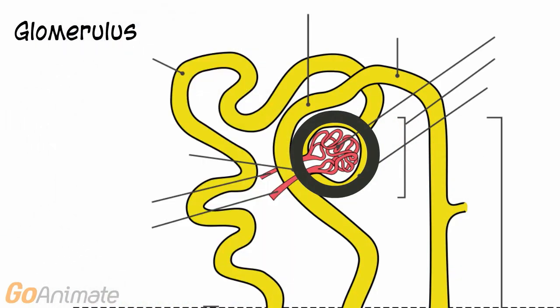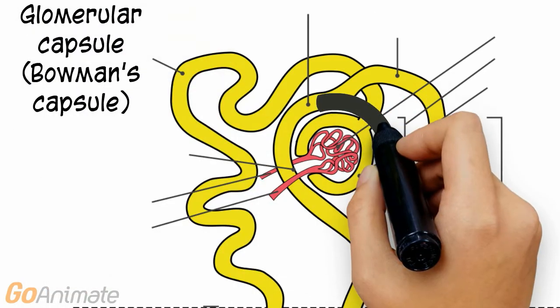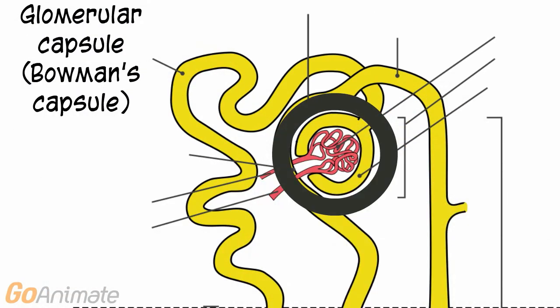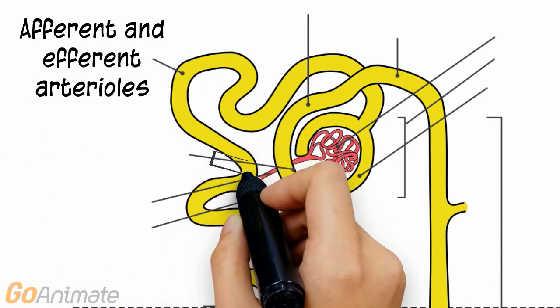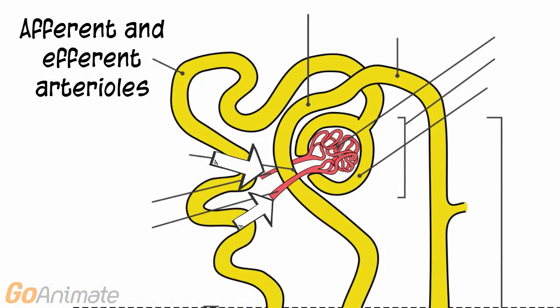Here are the parts of a nephron. The glomerulus is a capillary tuft that filters blood. It is surrounded by a fibrous capsule called the glomerular capsule, or Bowman's capsule. The afferent arteriole carries blood into the glomerulus, while the efferent arteriole carries blood out.